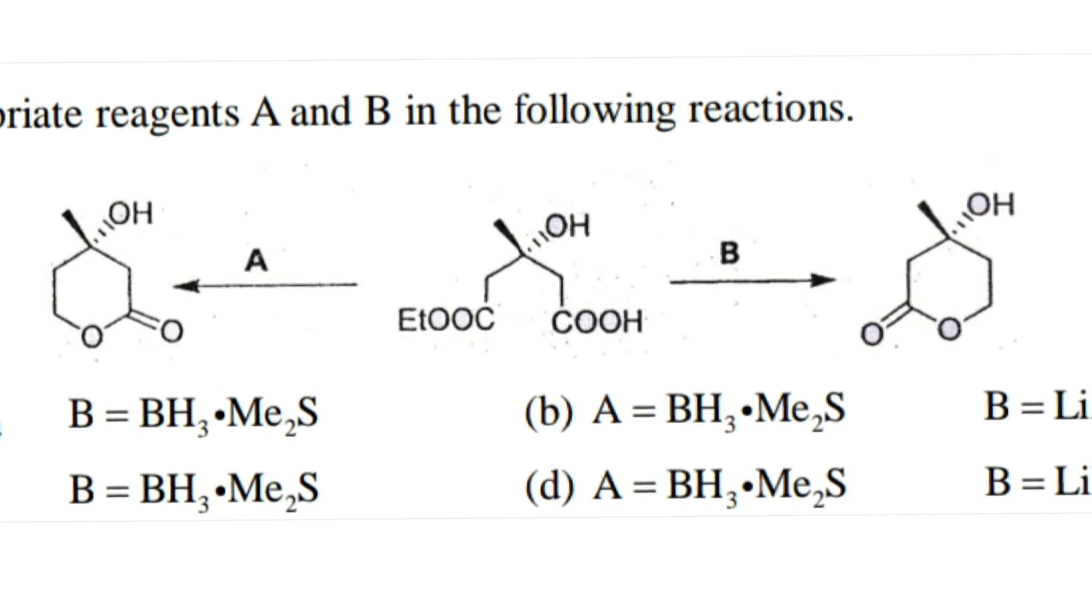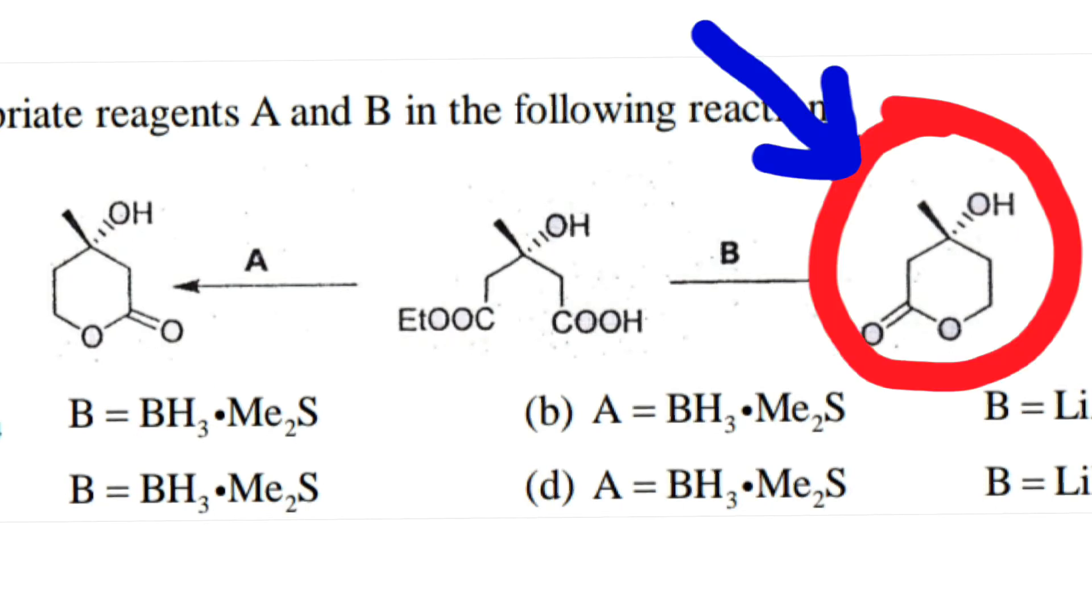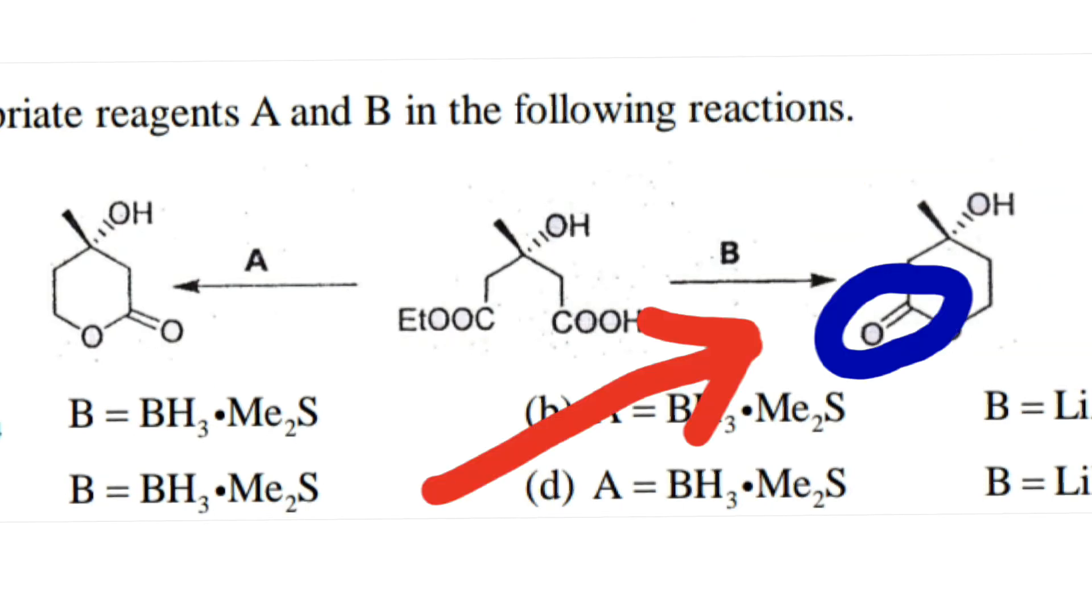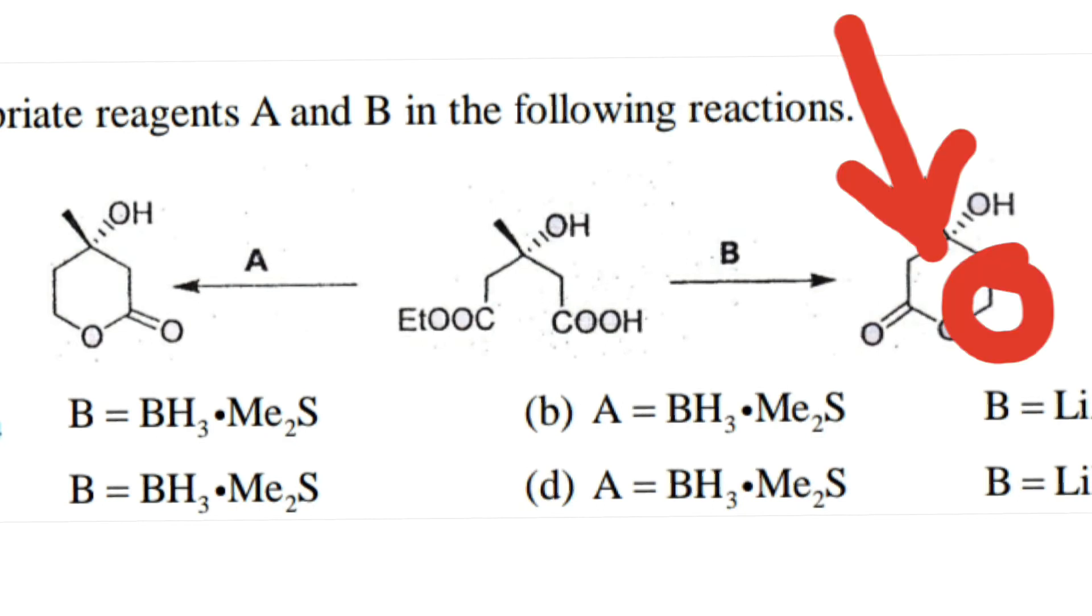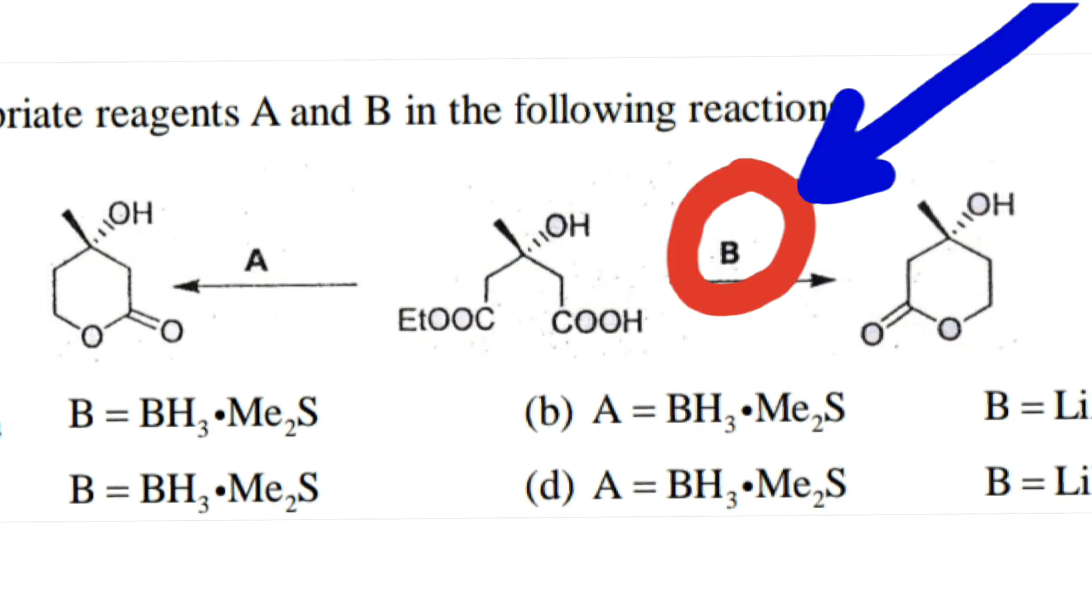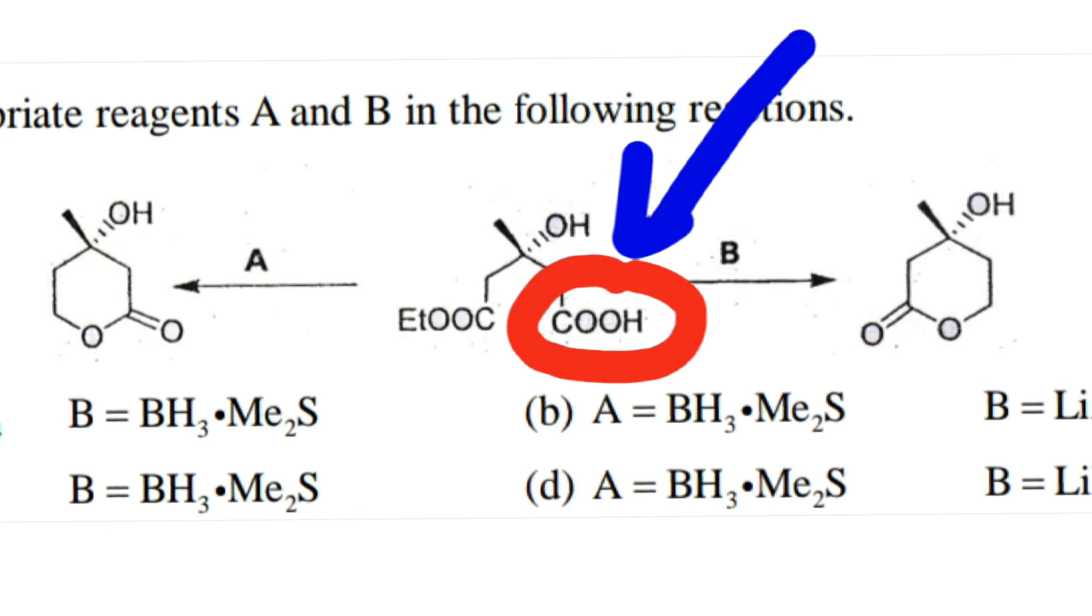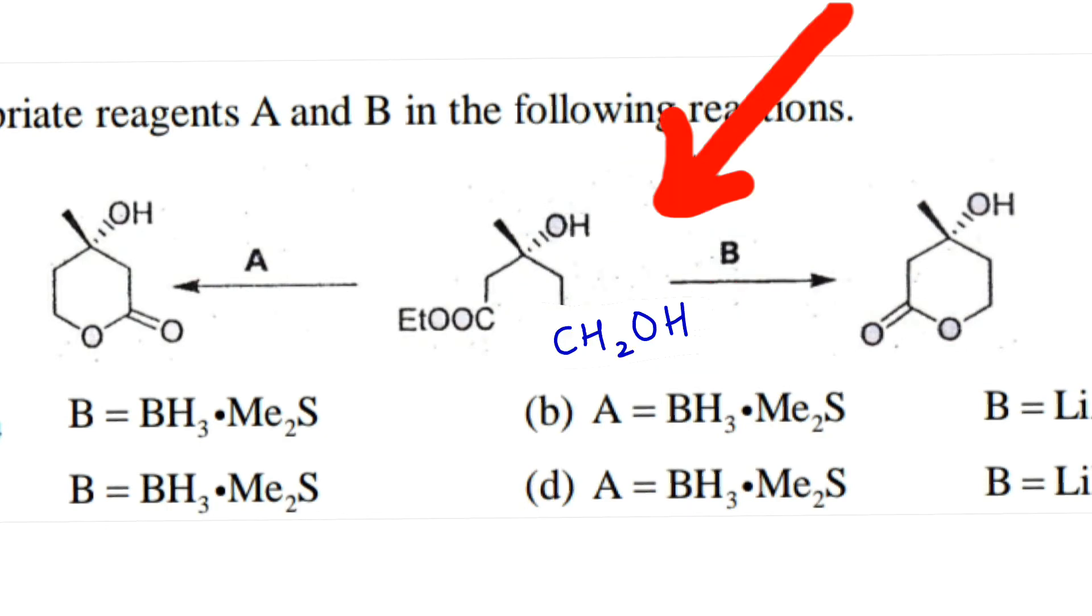When you observe this product, we have the carbonyl group here, oxygen here, and here the reduction had happened. The reagent B should be such that the carboxylic acid group should be reduced.